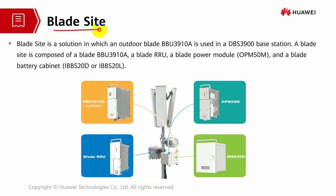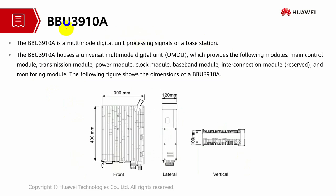Let's look through the blade site, which is a solution for the outdoor blade BBU 3910A series used in a DBS 3900 base station. The blade site is composed of a blade unit, blade RRU, blade power module, and a blade battery cabinet. BBU 3910 is also similar to an outdoor BBU — it is known as a multi-mode digital unit processing signal of a base station, with a universal multi-mode digital unit called UMDU. BBU 3910A provides main control module, transmission module, power module, clock module, baseband module, interconnection module, and monitoring module.